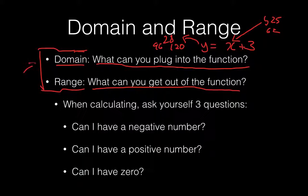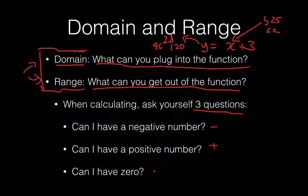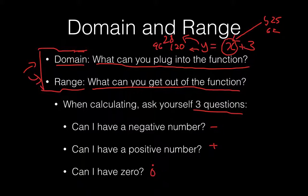Now when you're calculating these two — and you will have to eventually — you need to ask yourself three questions: Can I have a negative number? Can I have a positive number? Or can I have 0? When thinking about what you can plug into x, ask yourself: can I plug in a negative number? Can I plug in a positive number? Or can I plug in 0? When finding the range: can I get a negative number? Can I get a positive number? Can I get 0? Three questions you need to ask yourself.